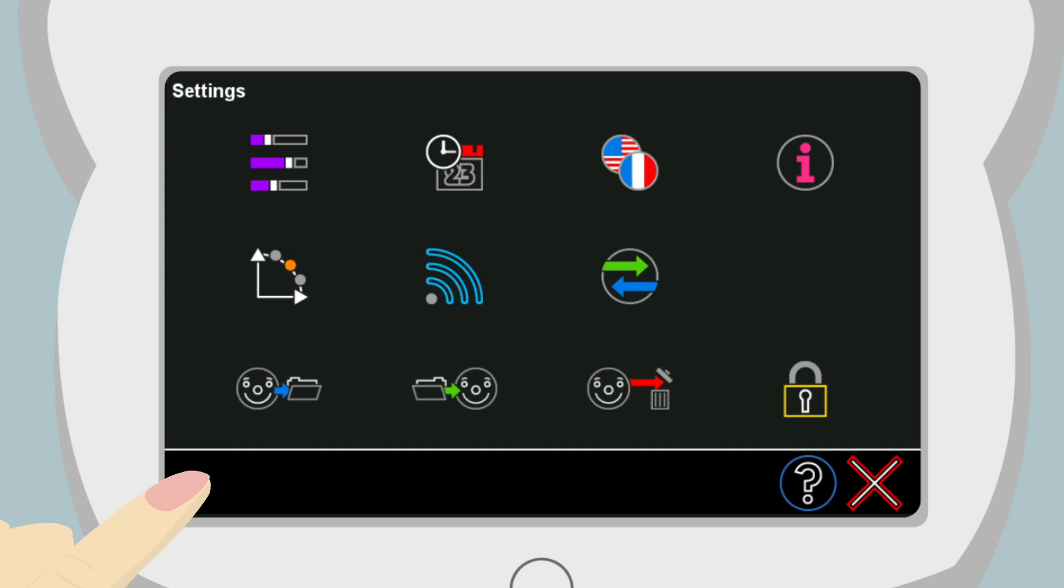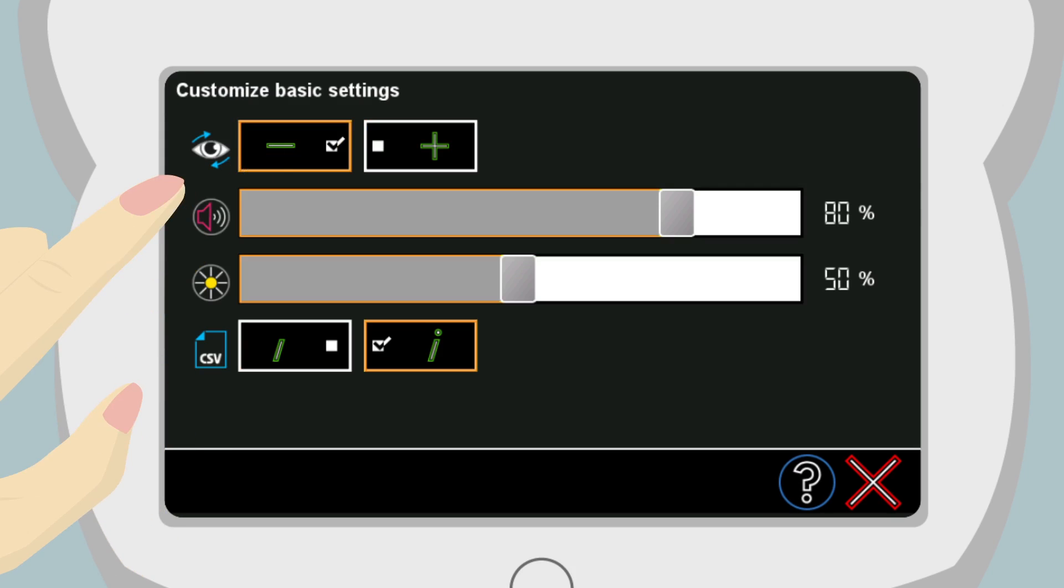Now touch the Settings button and then the button for the basic settings on the top left. This is used to adjust the device operating settings.